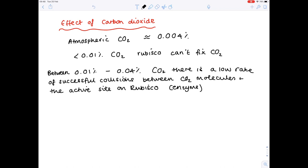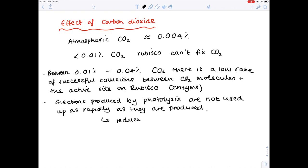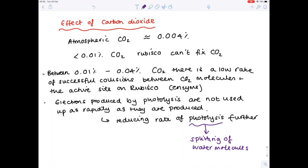Remember that during the process of photosynthesis, photolysis takes place, which actually produces the electrons needed to convert carbon dioxide into carbohydrates. Now in low concentration carbon dioxide levels, electrons produced by photolysis are not used up as rapidly as they are produced, and this has the knock-on effect of reducing the rate of photolysis further. Remember that photolysis is the splitting of water molecules, one of the key processes involved in photosynthesis.